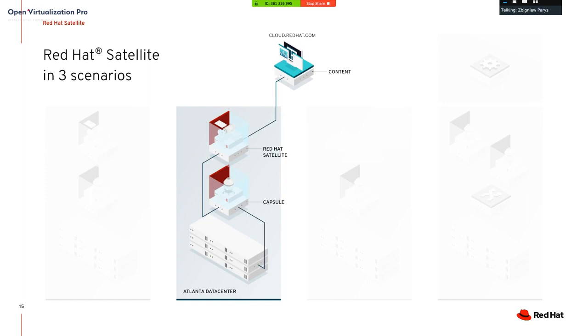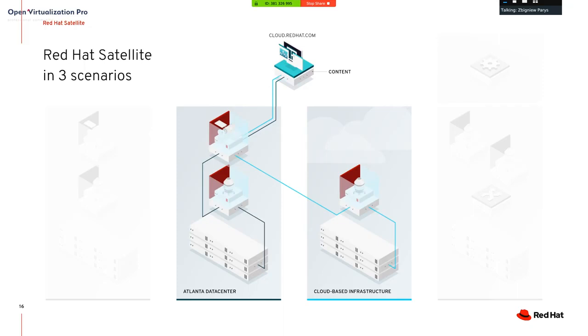A common scenario: a company with a data center in Atlanta implements Red Hat Satellite with a built-in capsule. This is a small environment, but the best scenario is cutting off your virtual machines from direct internet access. As the company grows by adding bare metal or virtual servers in a cloud provider, they create a Red Hat Satellite capsule in that same cloud environment to avoid traffic between Atlanta and the cloud infrastructure.